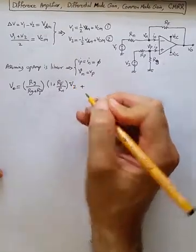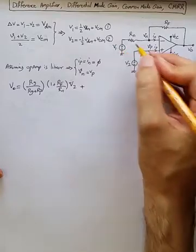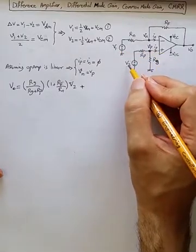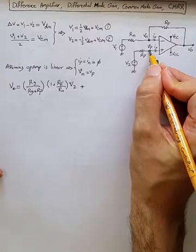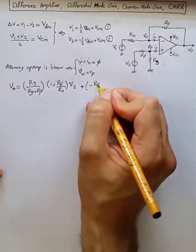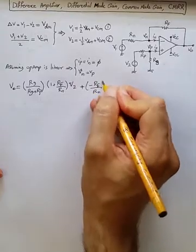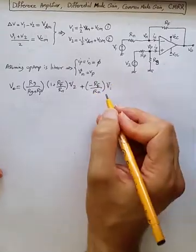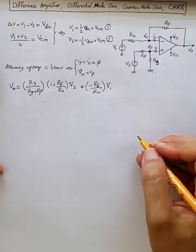Plus the contribution of V1, that's easy. Assuming V2 is not there, that's superposition. This voltage here is zero, and this would be zero here, so we get a simple equation of minus RF over Rn times V1. That's the contribution of V1 at the output.